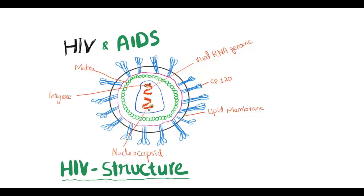Today we are going to talk about HIV and AIDS. HIV is an enveloped virus with a lipid bilayer outer membrane. There are glycoprotein molecules like GP47 and GP120 which help the virus in primary attachment with CD4 molecules on T cells.